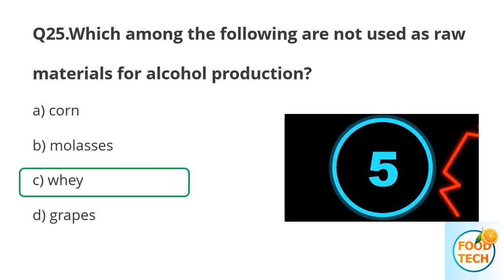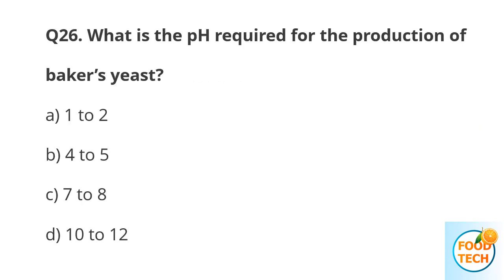Answer C. Whey. Question 26. What is the pH required for the production of baker's yeast? A. 1 to 2. B. 4 to 5. C. 7 to 8. D. 10 to 12.